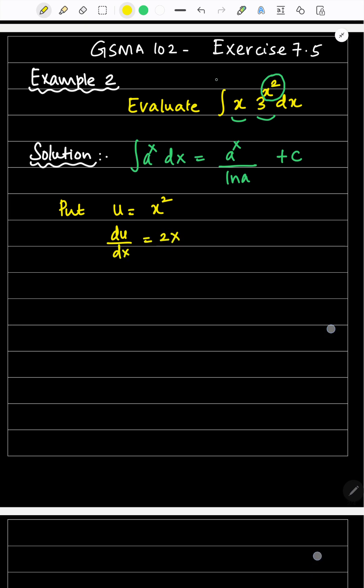After that, you need to convert everything in terms of u. The whole integral must be converted in terms of u. So, I cross multiply: du equals 2x dx.